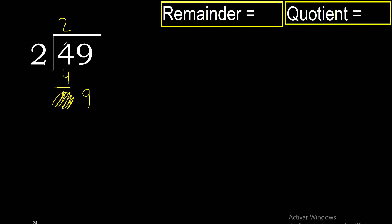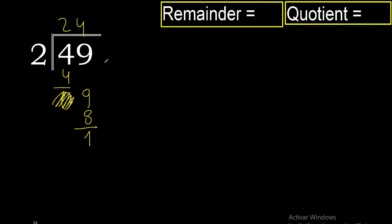2 multiplied by 5 is 10, excessive. 2 multiplied by 4 is 8. 9 minus 8 is 1. There is no number that goes down, therefore finish — remainder is 1.